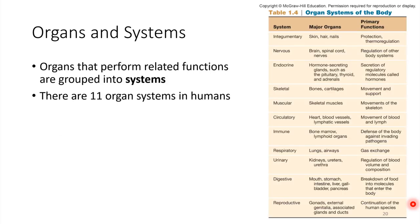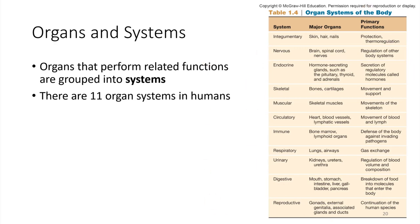A lot of times organs work together in sets, and this is where we'll be talking about organ systems. In humans, there are 11 organ systems that function throughout the body. We'll pretty much be spending a chapter on each of these organ systems. For right now, I'd just like you to familiarize yourself with them — know some examples of organ systems — but we'll be getting into the details of all of these throughout the semester.